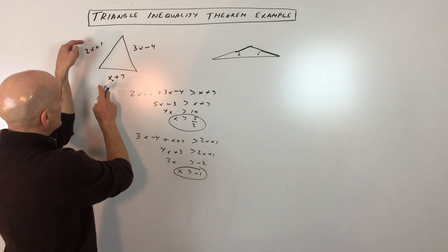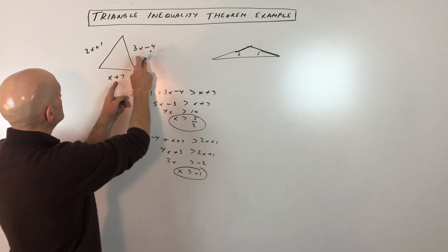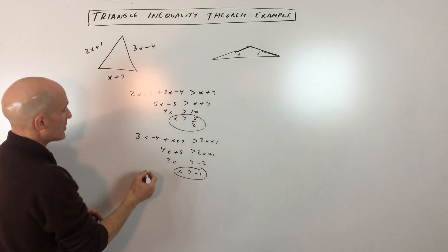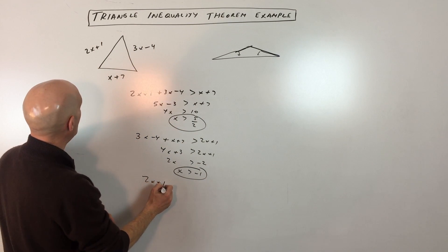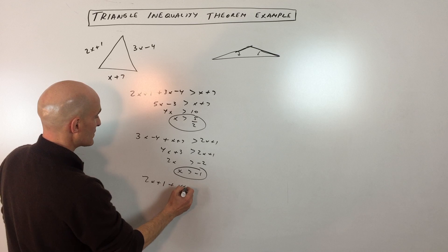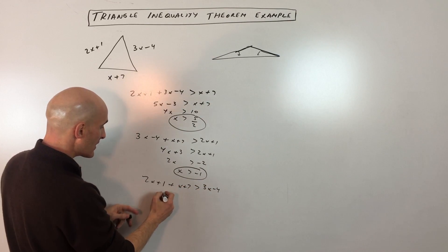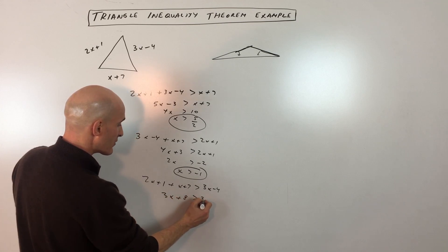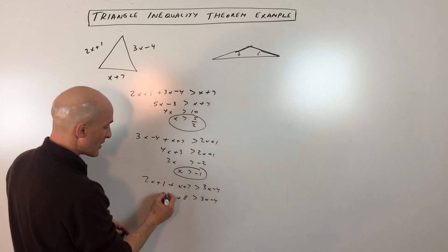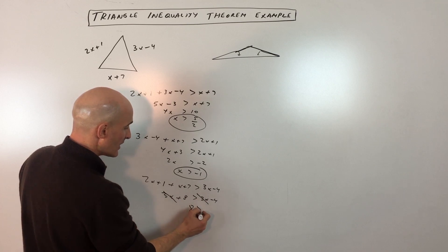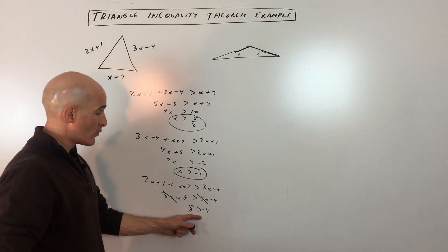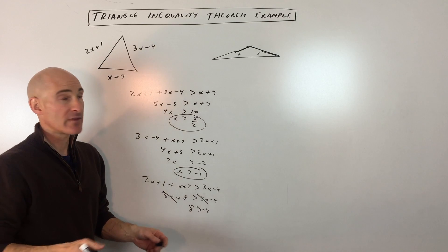And then the last one is, we've done these two, we've got these two are greater than this one. So we've got 2x plus 1 plus x plus 7 has to be greater than 3x minus 4. So here we get 3x plus 8 is greater than 3x minus 4. If we subtract 3x from both sides, we get 8 is greater than negative 4, which is always true. So we don't have to worry about that inequality.